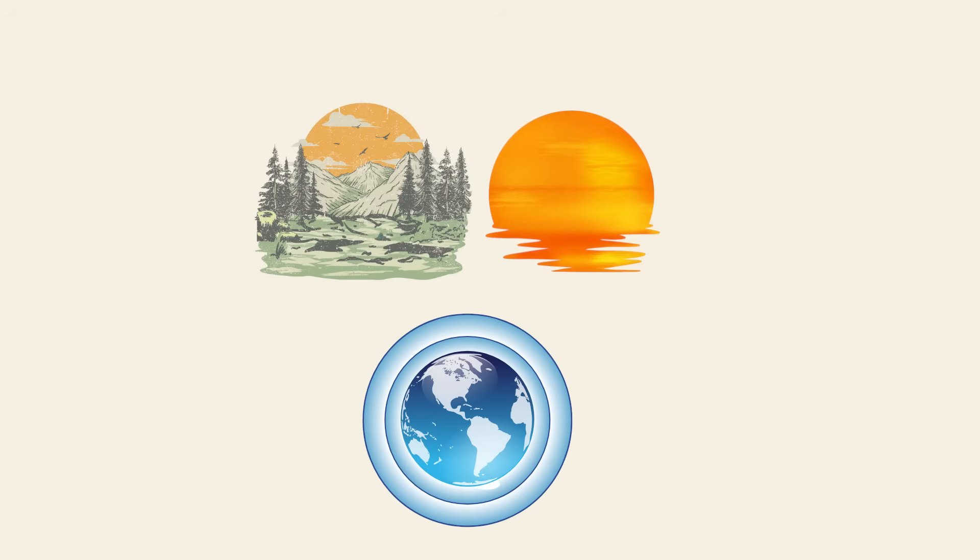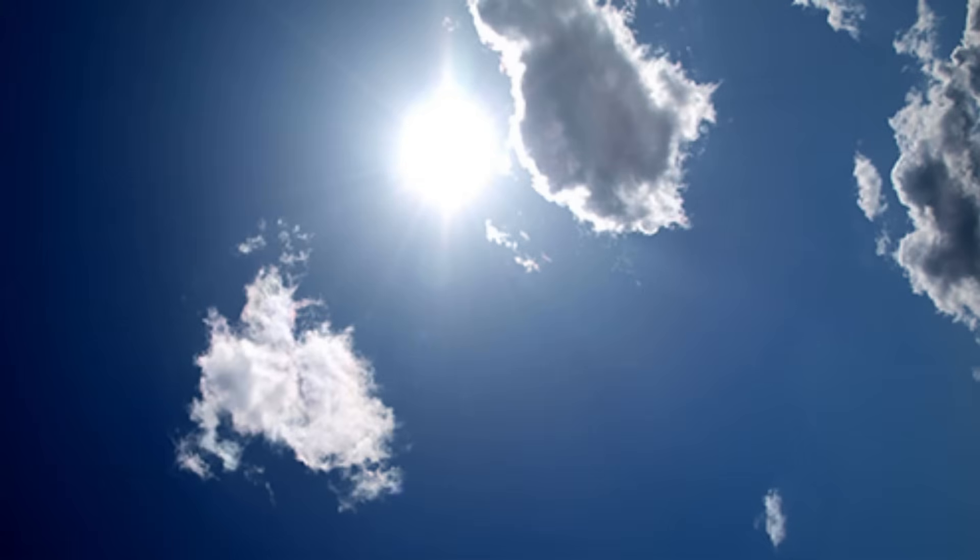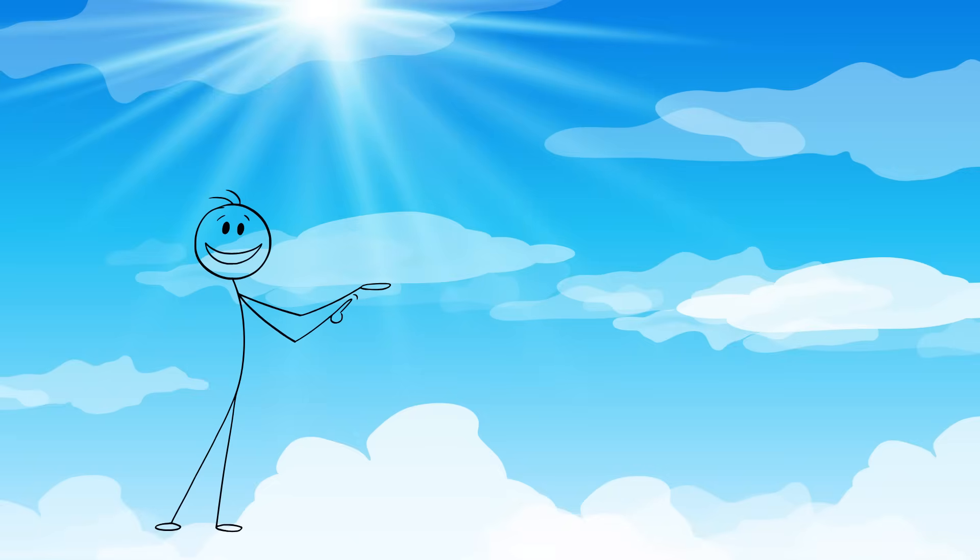During sunrise and sunset, the sunlight travels through more of the atmosphere, scattering most of the blue and letting reds and oranges shine through. This is also why the sky can appear gray on hazy or polluted days. More particles in the air scatter all wavelengths more evenly, dulling the blue effect. So the blue sky is a simple trick of light scattering and the right amount of air molecules doing their thing.